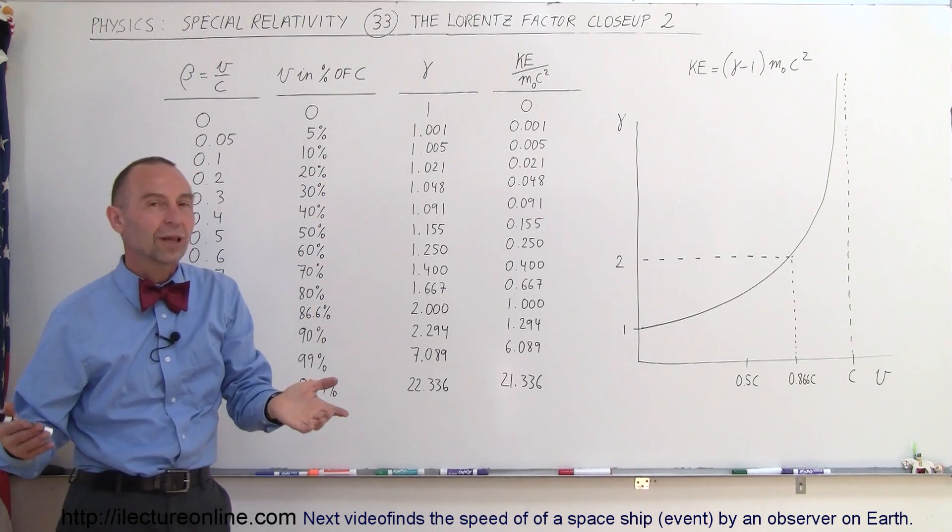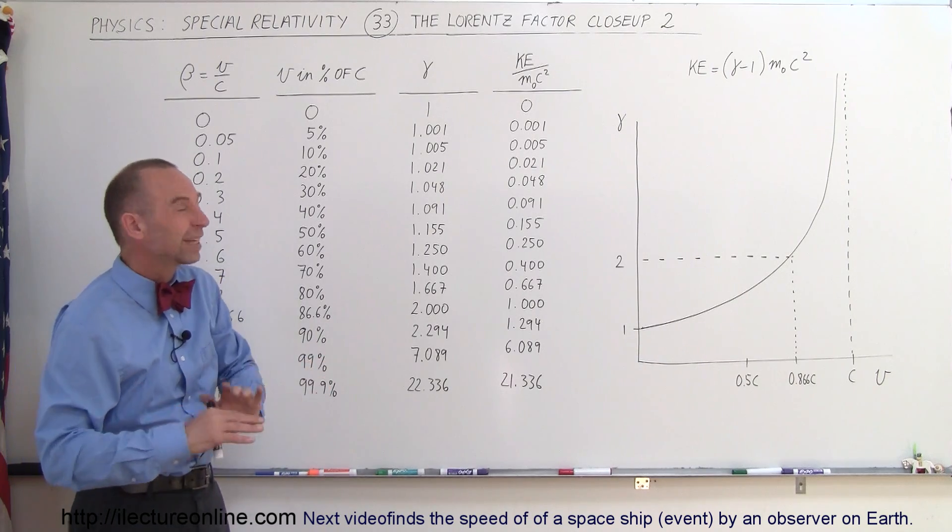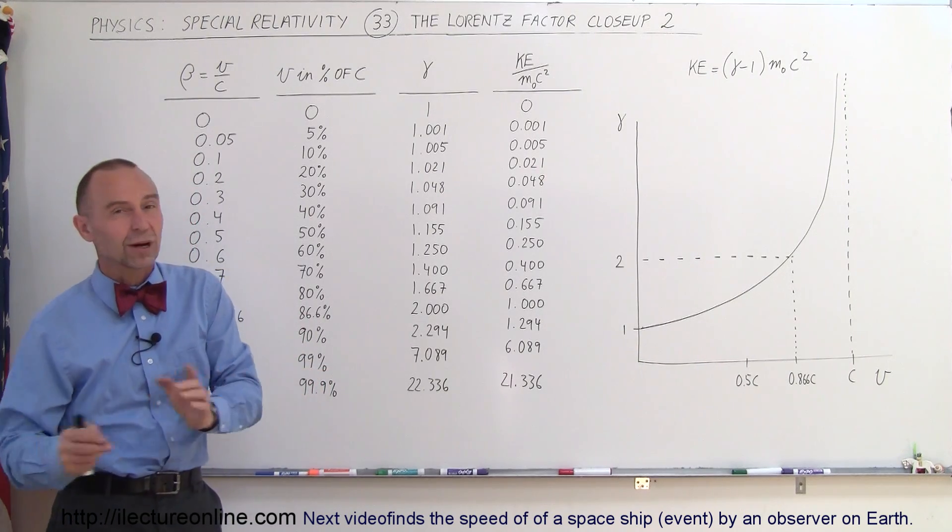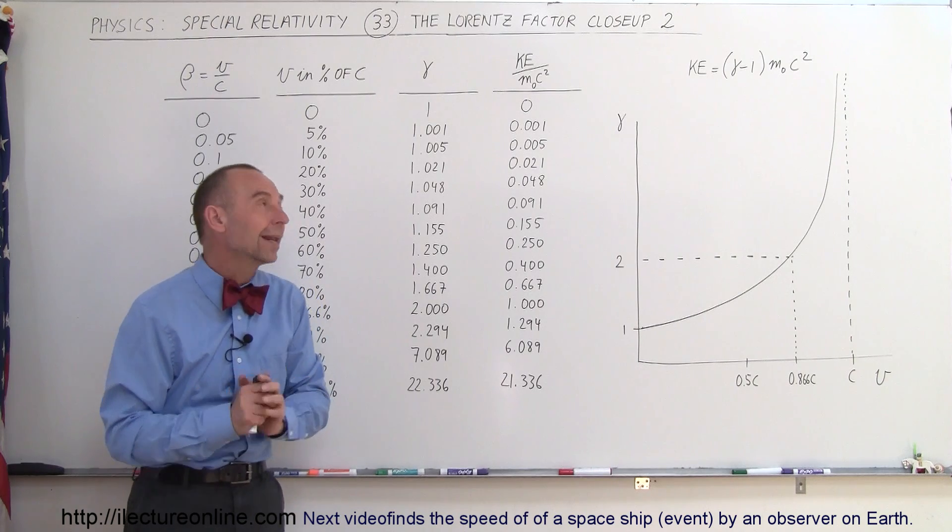When the Lorentz Factor is 1, that means there's no relativistic effects whatsoever. So kinetic energy is simply 1/2 mv², just like in our everyday world. We don't have to worry about anything.